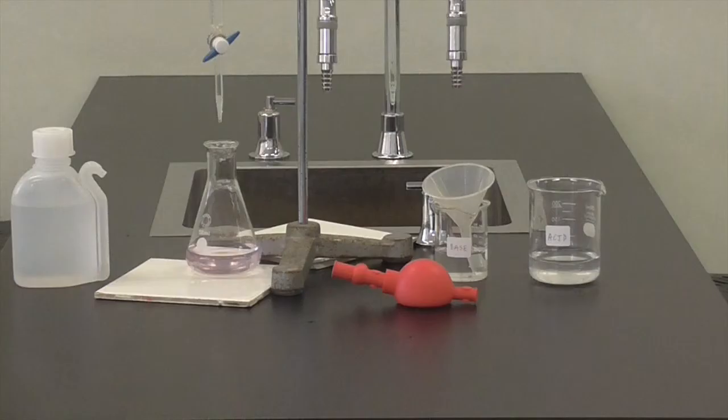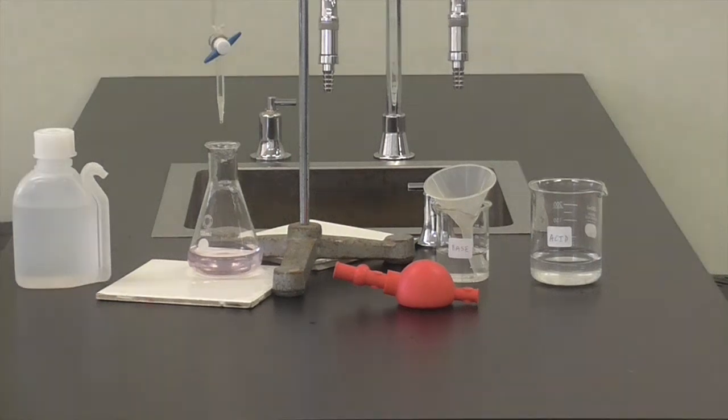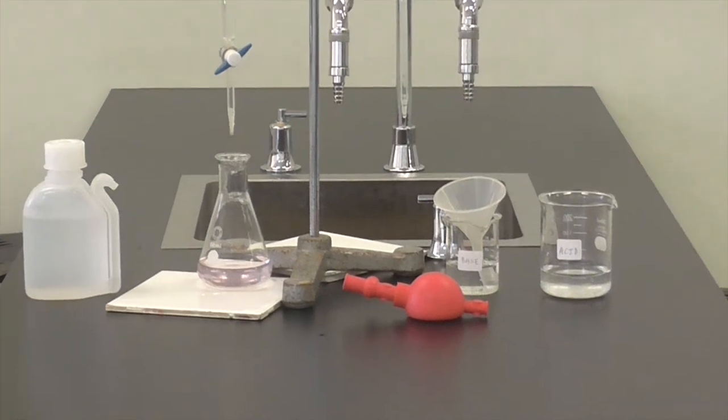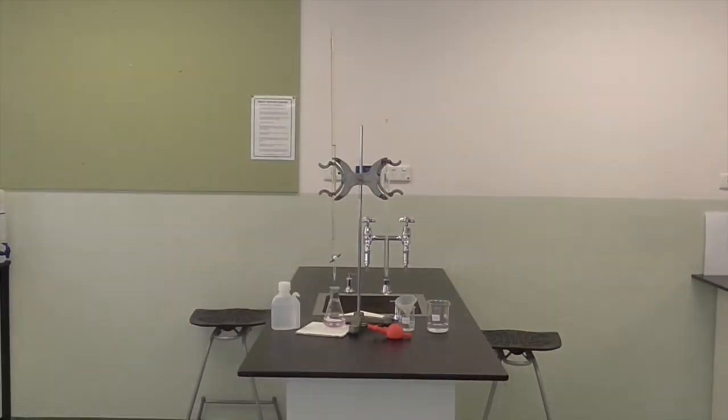This is the equipment we're going to use to do our titration. Our beakers of acid and base, a funnel, a pipette filler, conical flask, white tile, distilled water, a burette and a pipette in a stand.